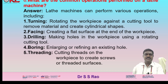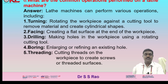What are the common operations performed on a lathe machine? Several operations are performed on lathe machines: turning — rotating the workpiece against a cutting tool to remove material and create cylindrical shapes; facing — creating a flat surface at the end of the workpiece perpendicular to its axis; drilling — making holes in the workpiece using a rotating cutting tool; boring — enlarging or refining an existing hole; threading — cutting threads on the workpiece to create screws or threaded surfaces.